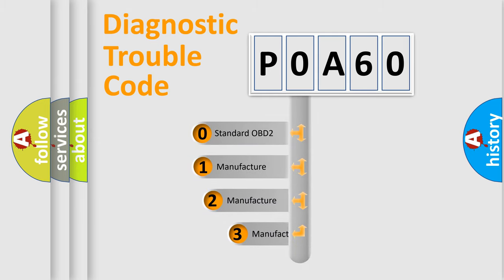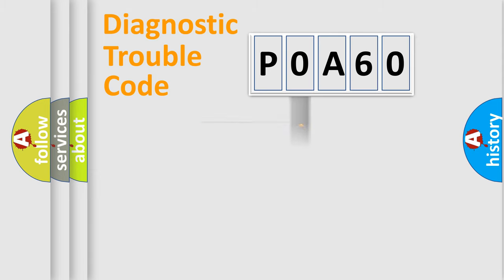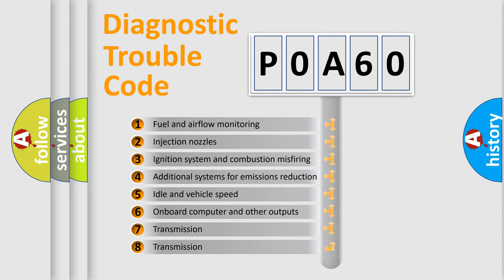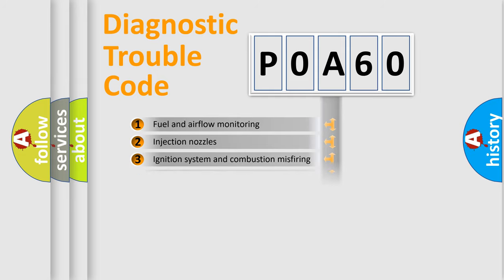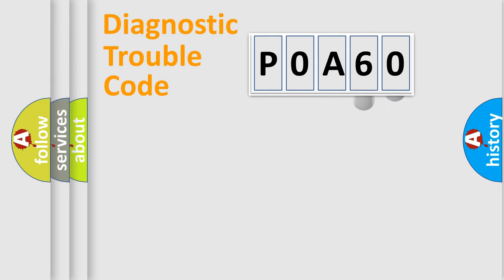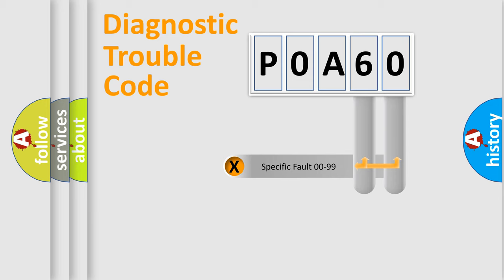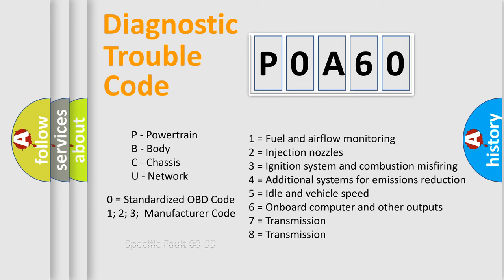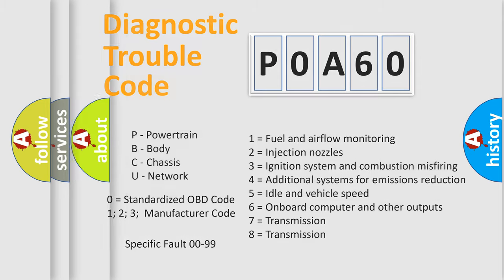If the second character is expressed as zero, it is a standardized error. In the case of numbers 1, 2, or 3, it is a more specific expression of a car-specific error. The third character specifies a subset of errors. This distribution is valid only for the standardized DTC code, and only the last two characters define the specific fault of the group. Such a division is valid only if the second character code is expressed by the number zero.